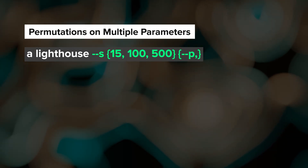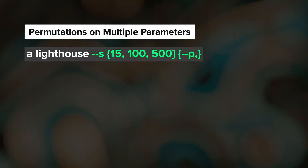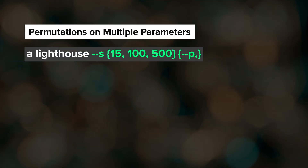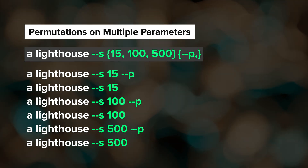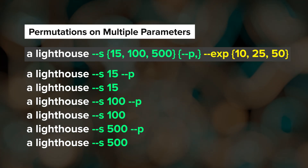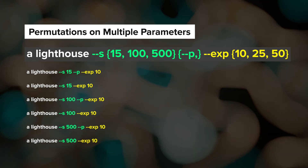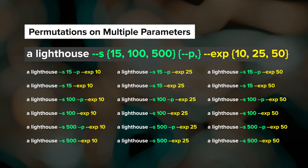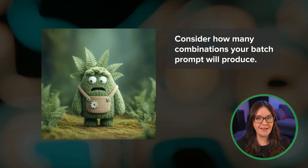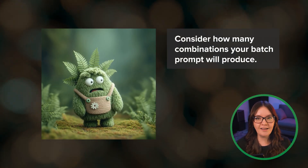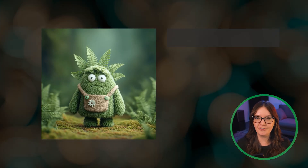In this prompt I have three different stylize values and I want to see results for each of those with and without my global personalization, so this permutation prompt is going to run six jobs. But maybe I also want to add in the exp parameter with values 10, 25, and 50. All of a sudden I'm submitting 18 jobs with this single prompt, so just be aware of how many combinations you'll be creating. Running a lot of big permutation prompts is a great way to chew through your fast GPU hours.